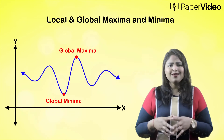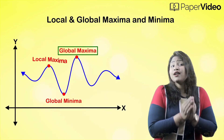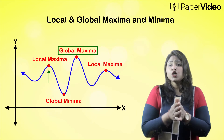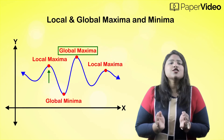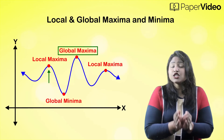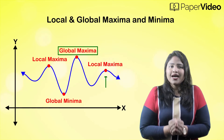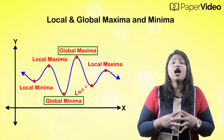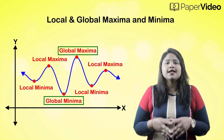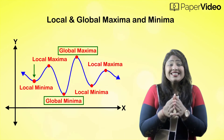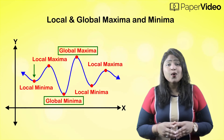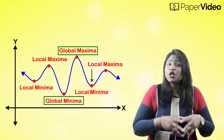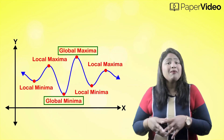Then what is local maxima and minima? If we keep global maxima aside, then all remaining points of maxima are known as local maxima. This means that since there is a mountain in this locality, in this area we have maxima — but since it is not the highest point on the entire curve, it is regarded as local maxima. Similarly, this point is also regarded as local maxima. In the same way, if we keep global minima aside, then all remaining points of minima are known as local minima. Since there is a valley in this locality, in this area we have minima — but since it is not the lowest point on the entire curve, it is regarded as local minima. Similarly, this point is also regarded as local minima. This is the difference between local and global maxima and minima.